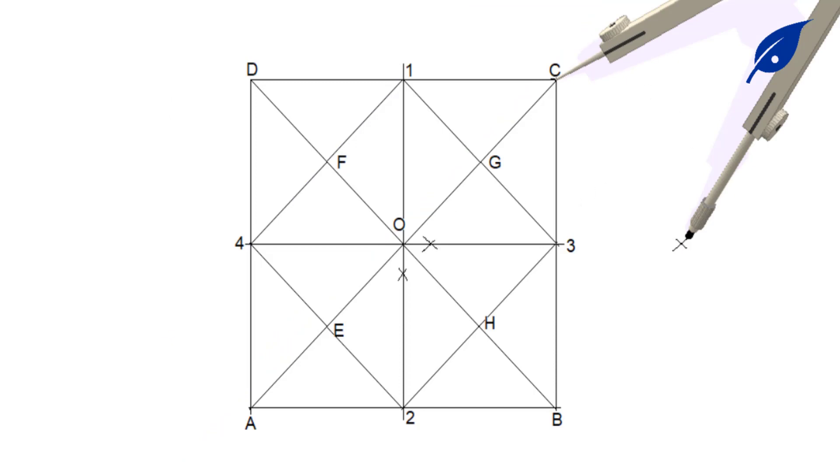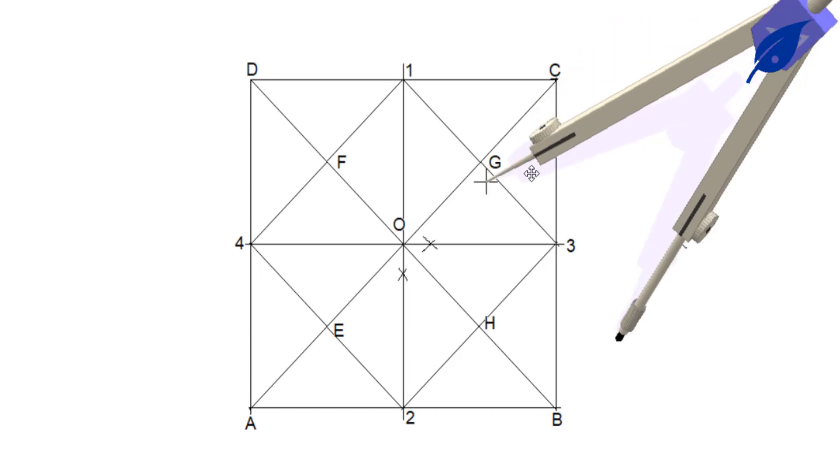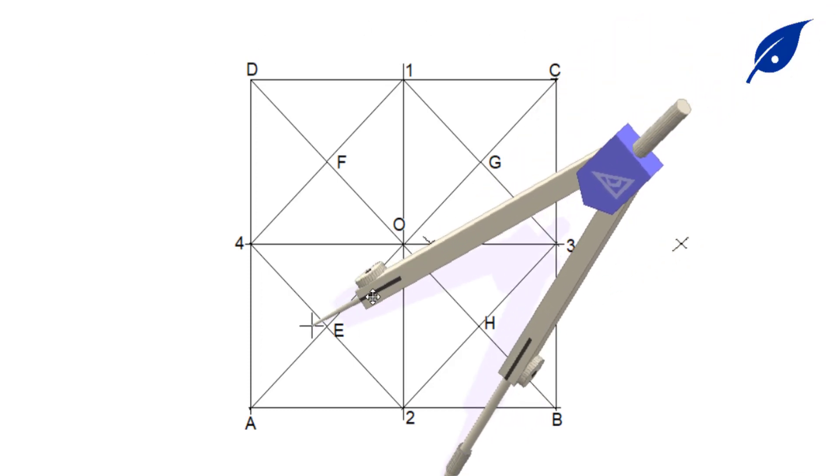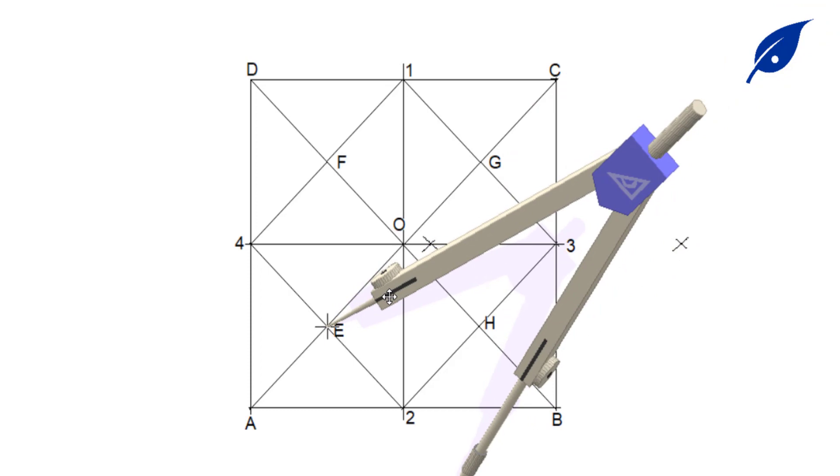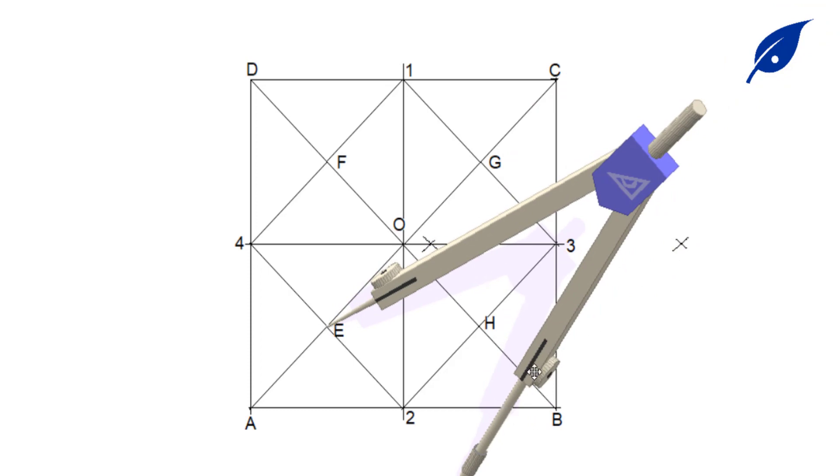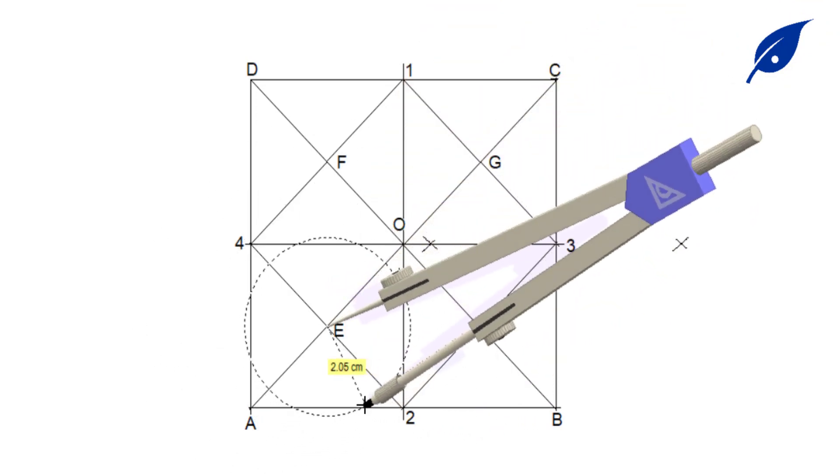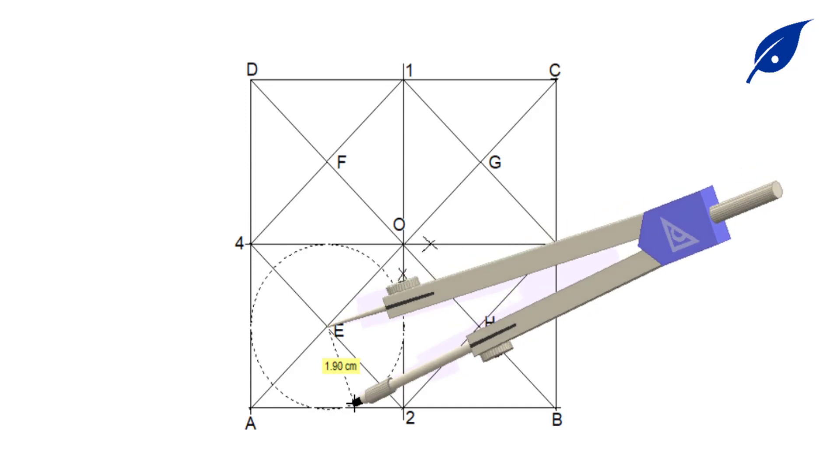From each of these points that we labeled, that will be the center of our circle. Then the radius will be from point E to the edge of the square. Put your compass center at E,